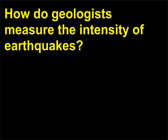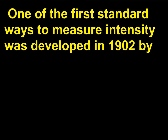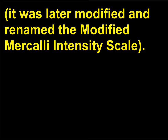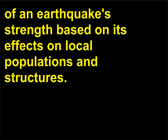How do geologists measure the intensity of earthquakes? Geologists measure the intensity of earthquakes in order to compare and judge potential damage. One of the first standard ways to measure intensity was developed in 1902 by Italian seismologist Giuseppe Mercalli, 1850–1914, and is called the Mercalli Intensity Scale. It was later modified and renamed the Modified Mercalli Intensity Scale. The numbers, in Roman numerals from I to 12, represent the subjective measurement of an earthquake's strength based on its effects on local populations and structures.